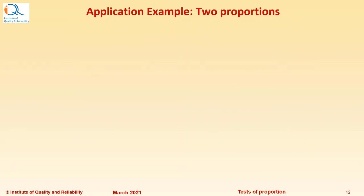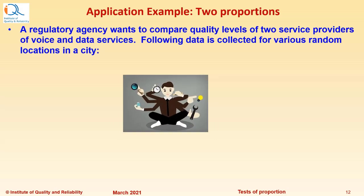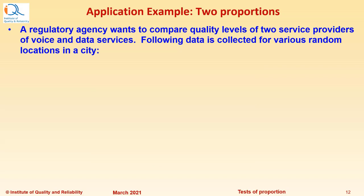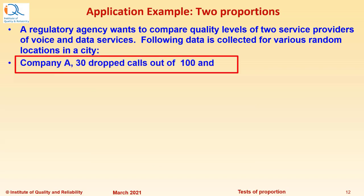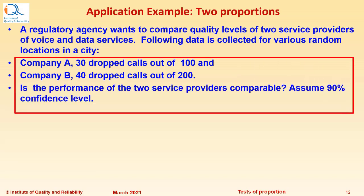Now let us see an application example of two proportions test. A regulatory agency wants to compare quality levels of two service providers of voice and data services. Following data is collected for various random locations in a city: Company A 30 dropped calls out of 100 and Company B 40 dropped calls out of 200. Is the performance of the two service providers comparable? Assume 90% confidence level.